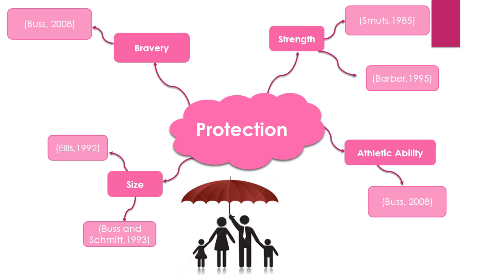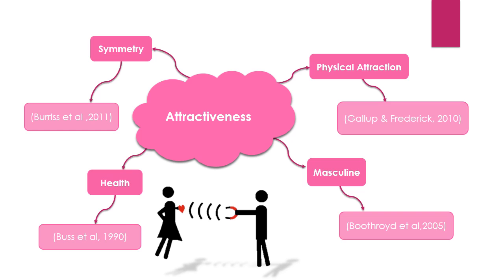The next characteristic is attractiveness, which can be split into symmetry — those with a symmetrical face may be seen as more appealing than those who are not. Furthermore, we have physical attraction, masculinity, and health. Attractiveness tends to suggest that males are fit and healthy and have good genes for the next generation.